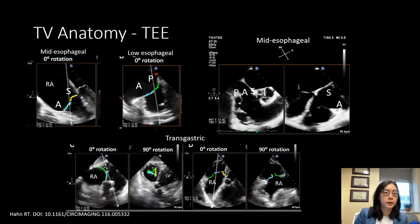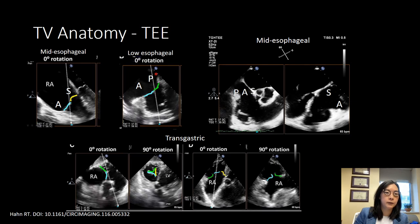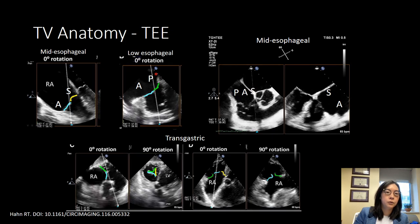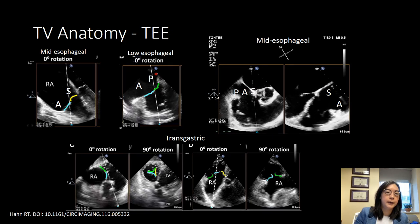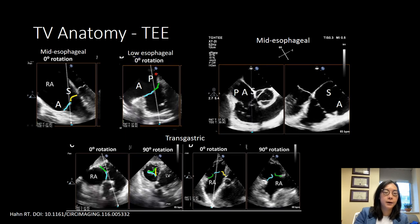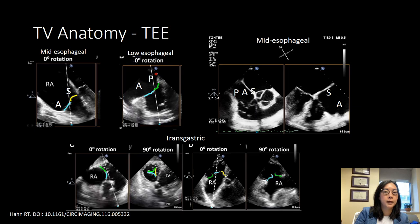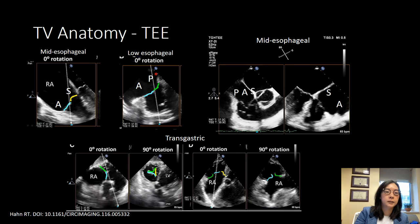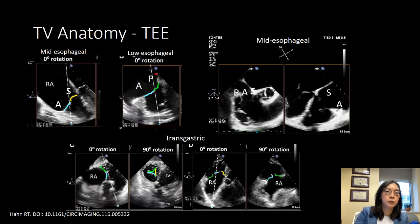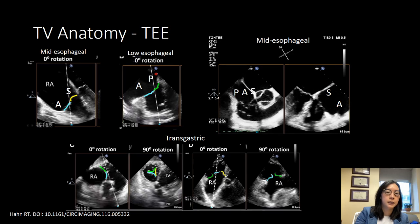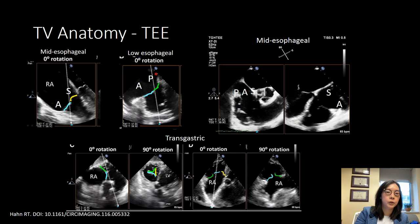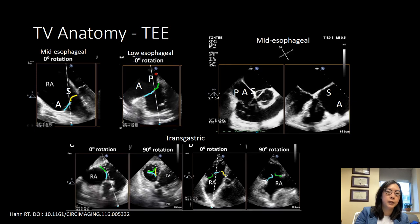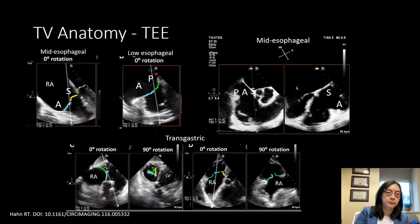Moving on to transesophageal imaging: in a mid-esophageal view, sometimes if you can't see your tricuspid valve leaflet, you'll have to push down and be in a low esophageal view. In a mid-esophageal view, you're usually looking at the septal and anterior leaflet. If you've pushed down and you see the coronary sinus, then you're looking at the posterior and anterior leaflets. In a short-axis view where you see just two leaflets, you're usually looking at anterior and posterior leaflets. If you push down and foreshorten your view in the low esophageal position, then you're looking at septal and anterior leaflets.